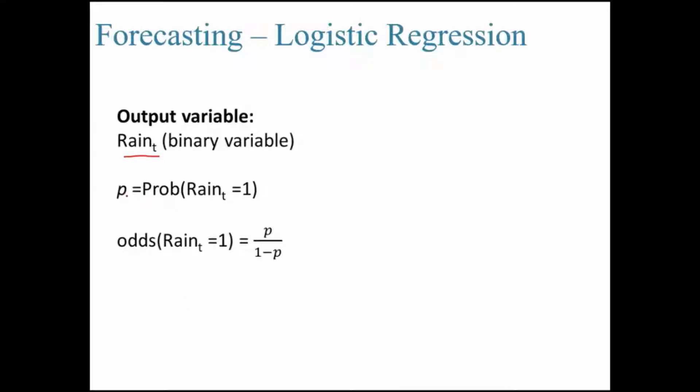First of all, we need to look at probability value, probability of rain occurring. Probability of rain occurring to the probability of rain not occurring is called as odds value. Now, what is log of odds? If I take a log of this, it's called as logit.